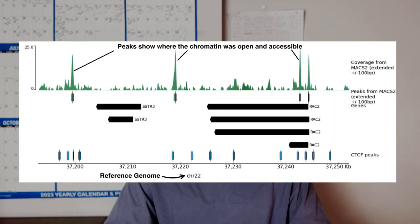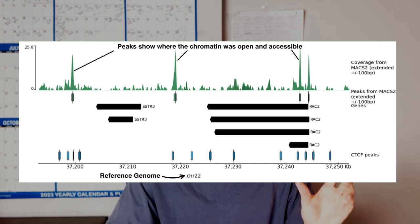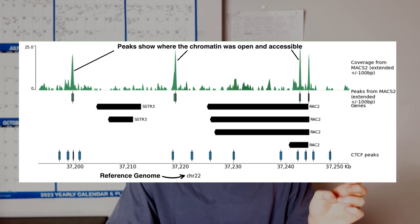Now with our sequencing data, we can turn to bioinformatics — this is where the real magic happens. By comparing or aligning our sequences to a known reference genome, we can pinpoint the exact chromatin locations that were open and accessible. These accessible regions, often visualized as peaks on a graph, reveal the active hubs of our DNA. They show us potential sites where proteins might bind, where genes might spring into action, and where crucial regulatory elements might be orchestrating the symphony of gene expression.